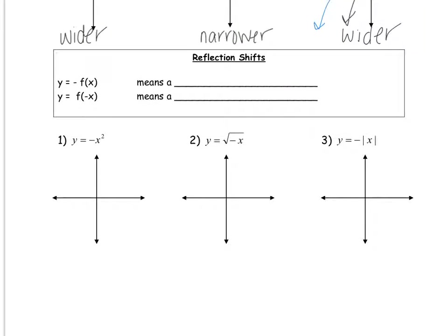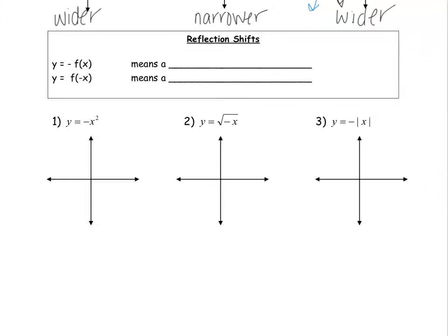Let's move on to the last type of shift: a reflection. The only way to get a reflection is if there's a negative. If the negative is outside the parentheses, it's going to flip over the x-axis. If the negative is inside, we flip over the y-axis. This looks familiar — plugging in negative x for all values of x is like even functions, which are symmetrical to the y-axis.